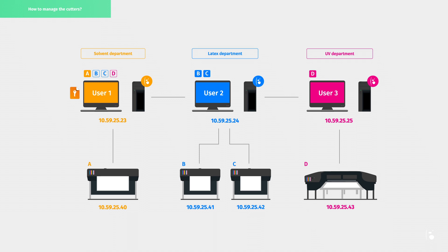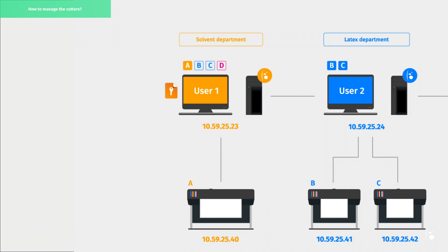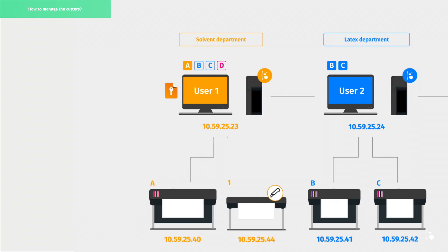With Caldera RIP software, it's also possible to manage the cutter through the client-server architecture. Let's say a roll-to-roll cutter has been installed in the solvent department. In this example, the cutter is plugged into the same local network and is therefore visible for all users. Here we assume that both user 1 and user 2 need to submit cut files to this device, but only the solvent department is in charge of the production.